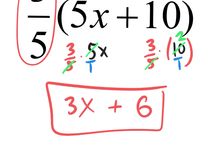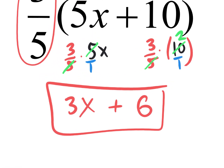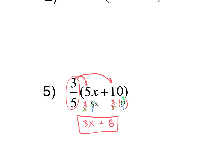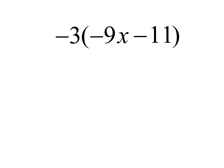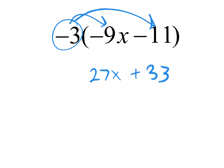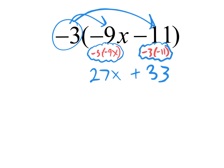That is the final answer because you cannot combine three x with six — they would have to be like terms in order to combine them. We have some easy ones too: the answers are going to be positive 27x and positive 33. You could show your work — negative three times negative nine x is 27x, and negative three times negative 11 is 33. You'll get 27x plus 33 as a final answer. With fractions, it's very important that you show your work.